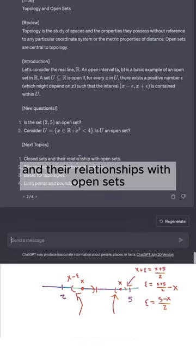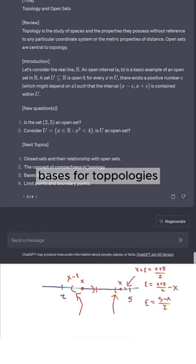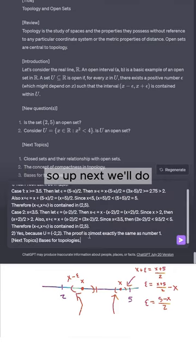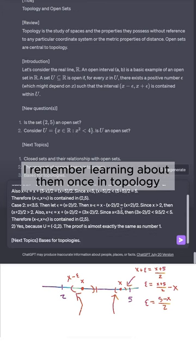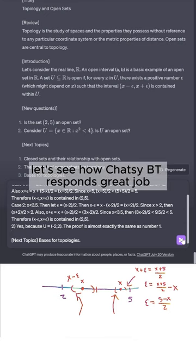Number one is closed sets and their relationships with open sets, the concept of compactness in topology, bases for topologies, and limit points and boundary points. I guess next I want to do either three or four. So up next, we'll do bases for topologies. I have no idea what those are. I remember learning about them once in topology and then I forgot within one semester. Let's see how ChatGPT responds.